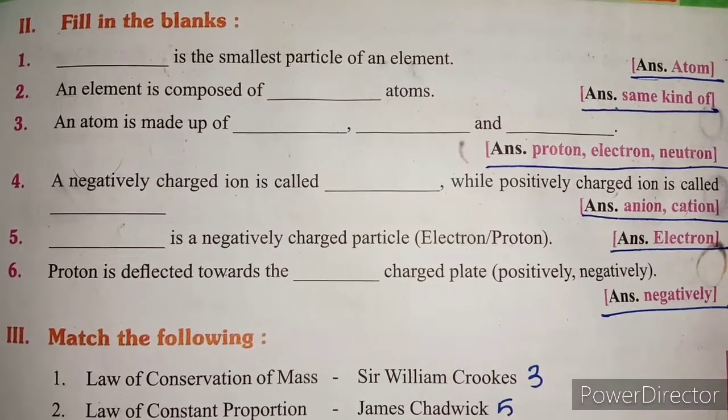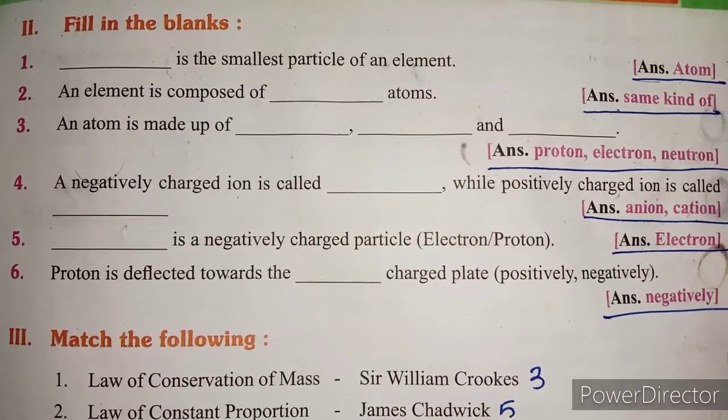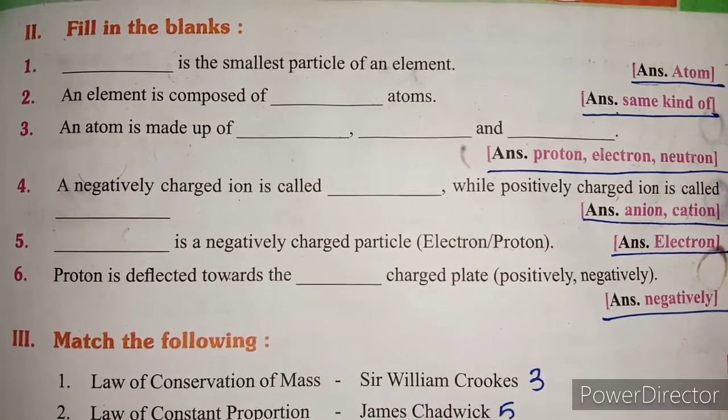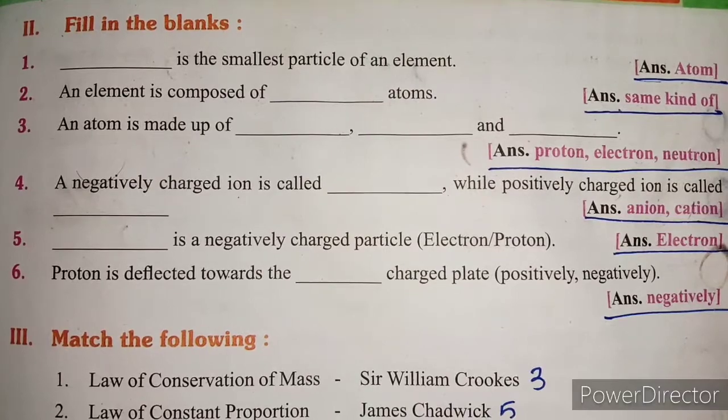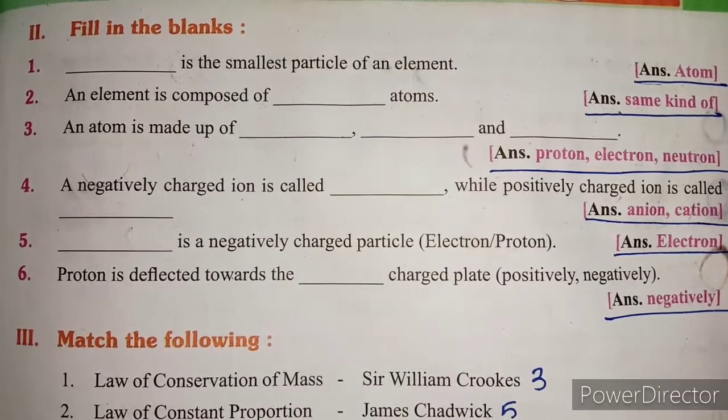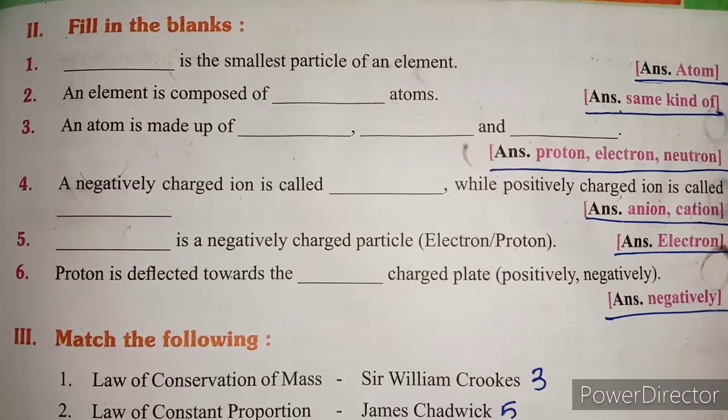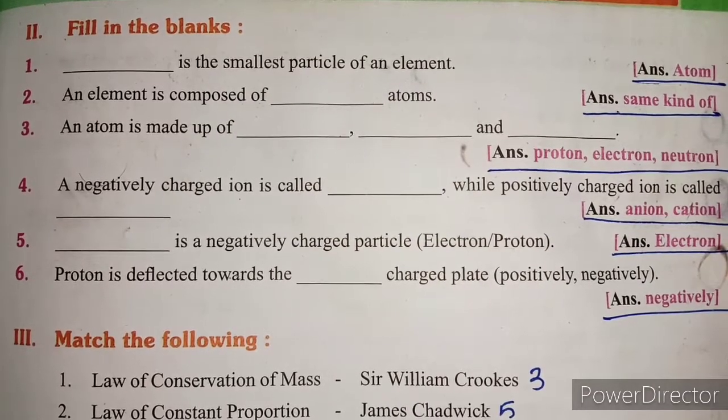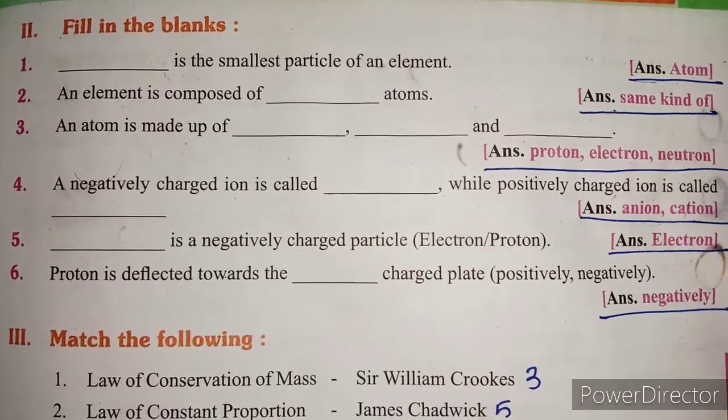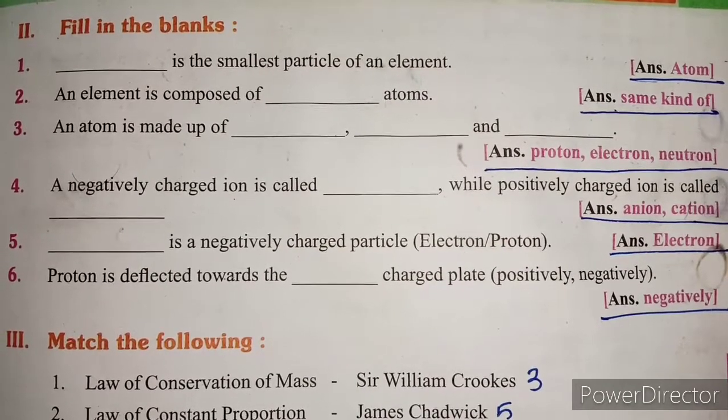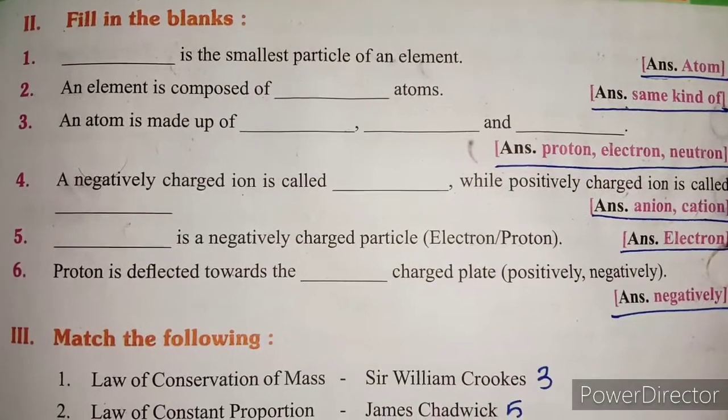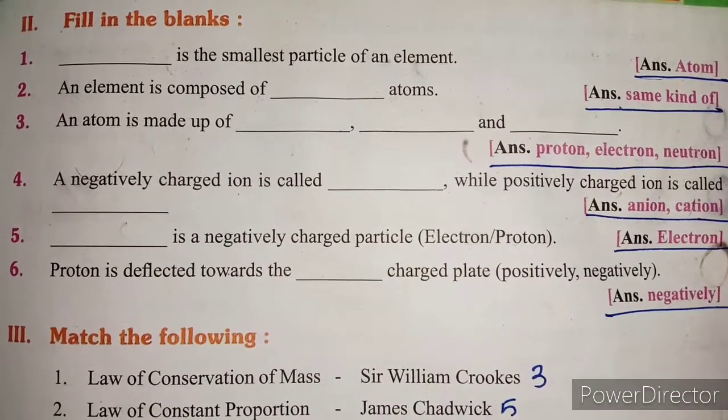anion, while positively charged ion is called cation. Question 5: Electron is a negatively charged particle. Question 6: Proton is deflected towards the negatively charged plate.